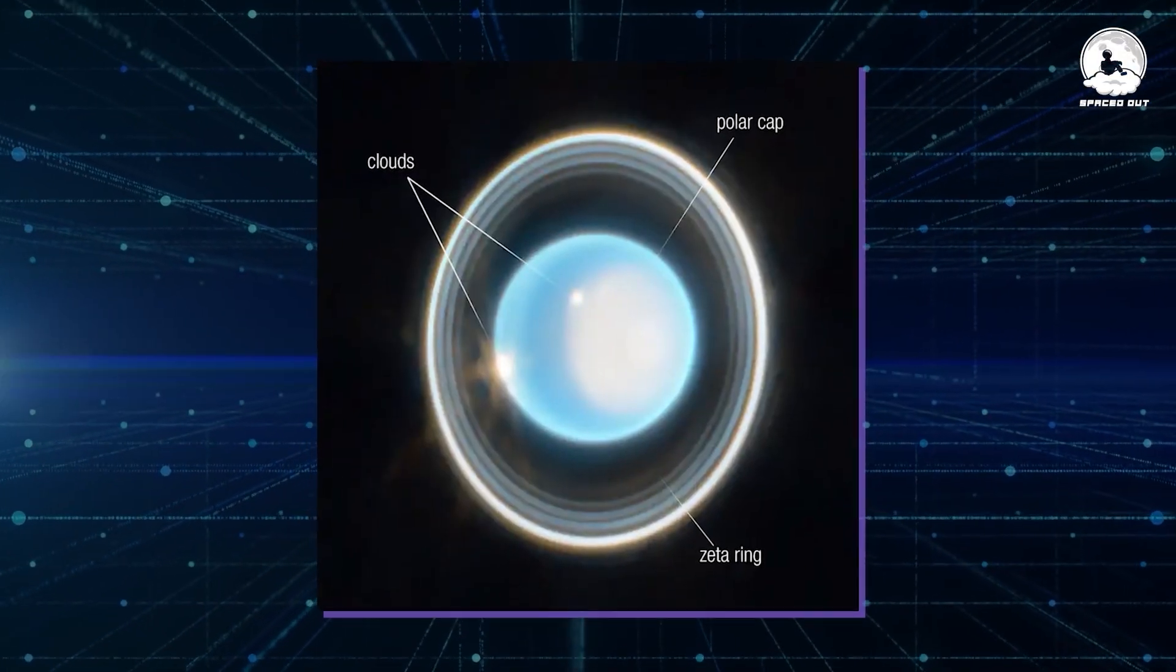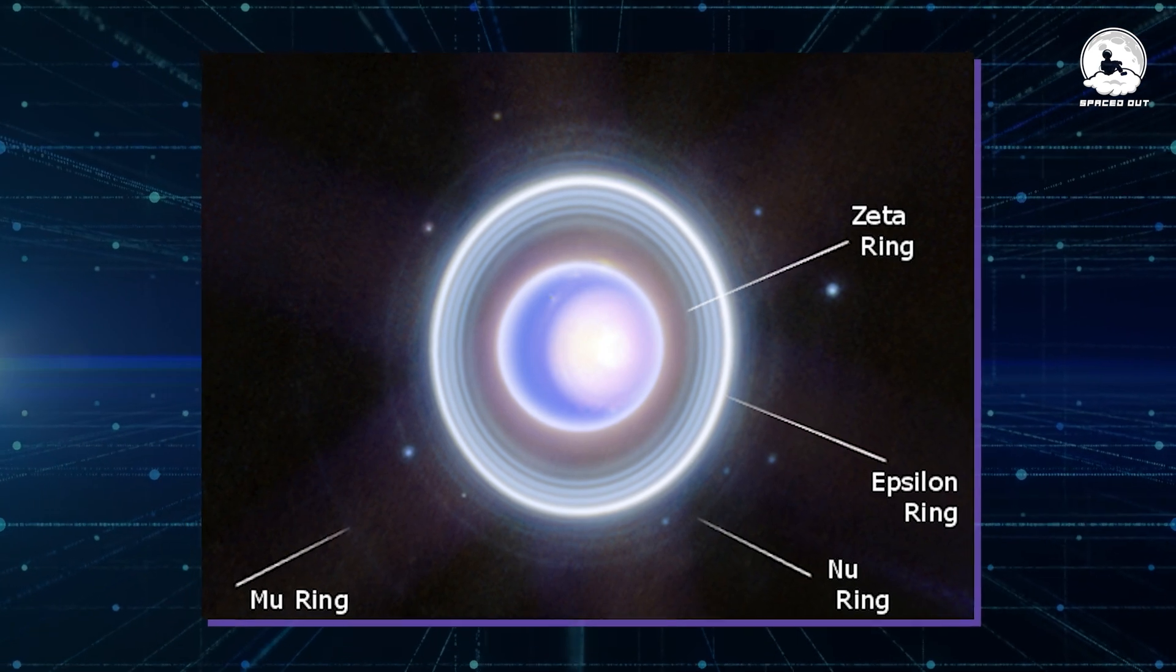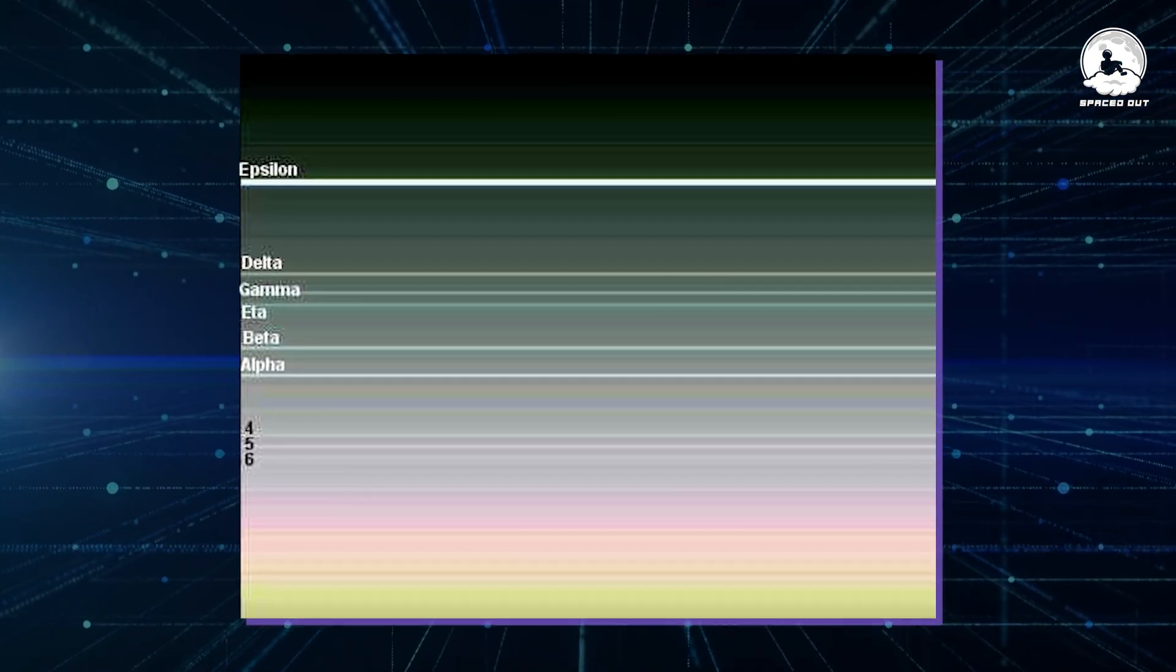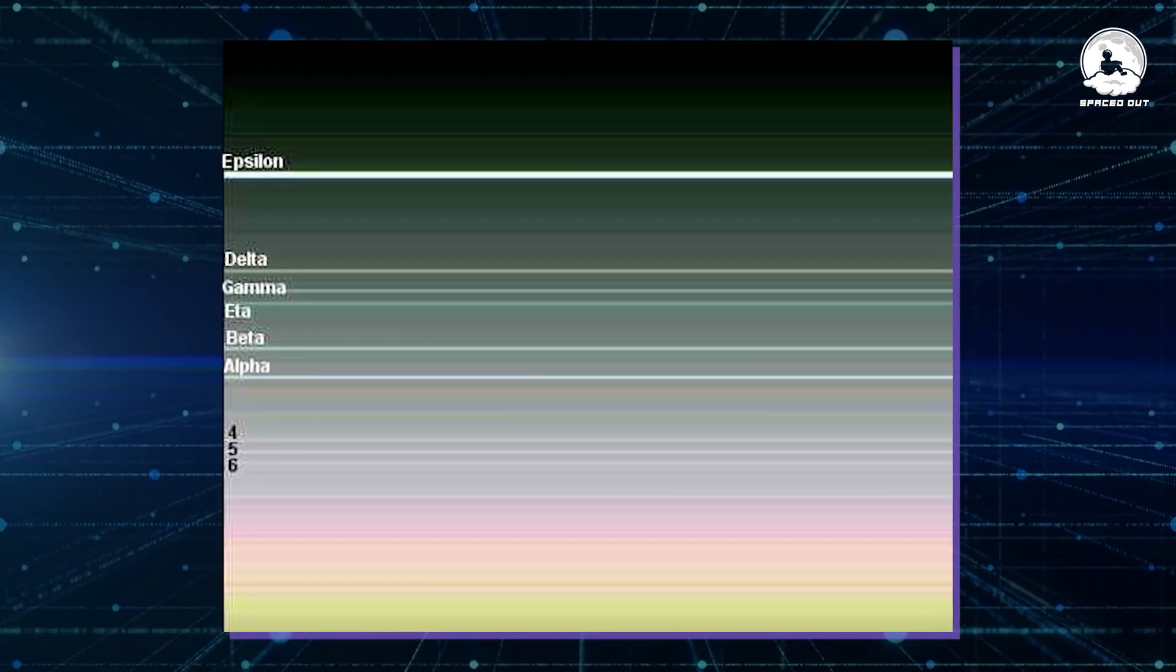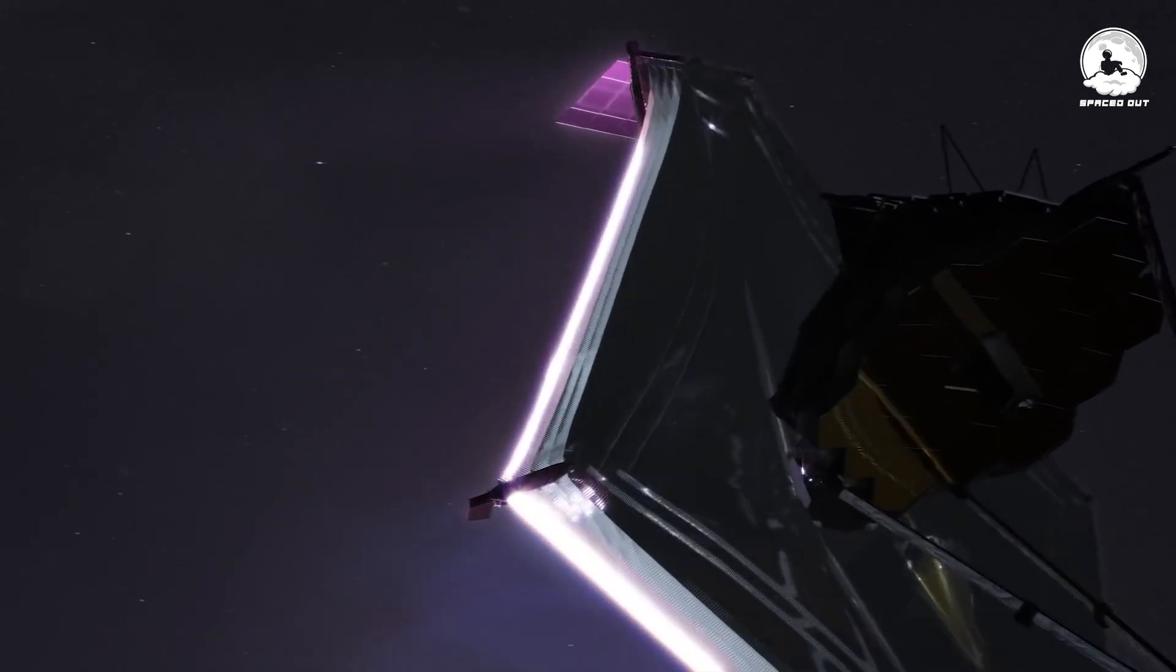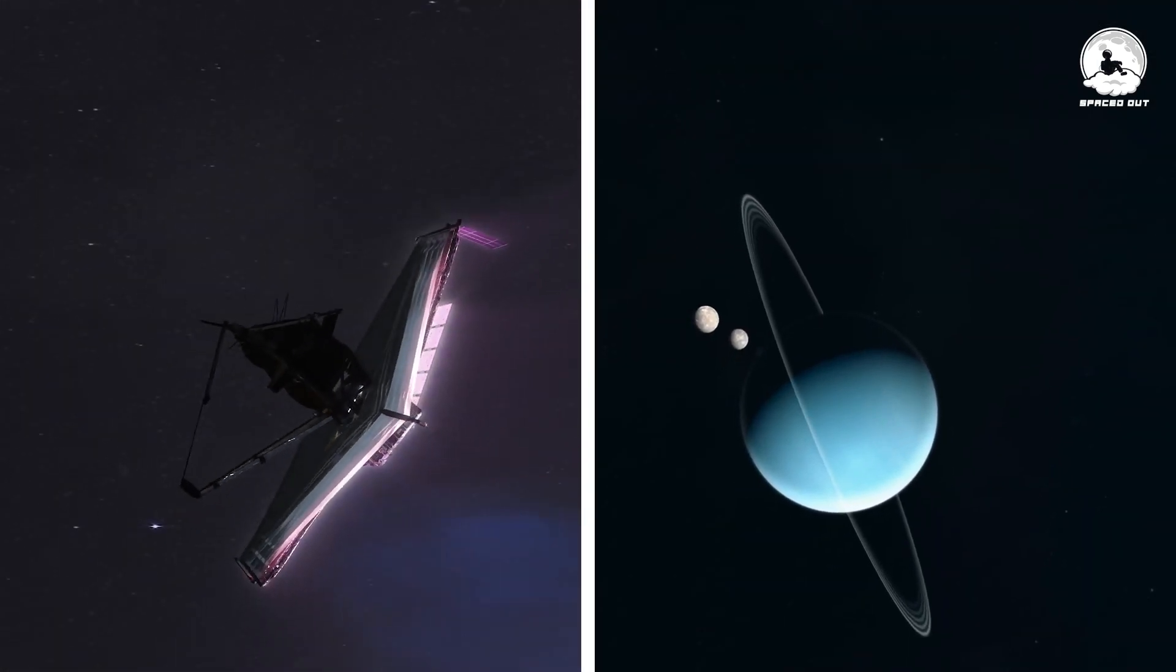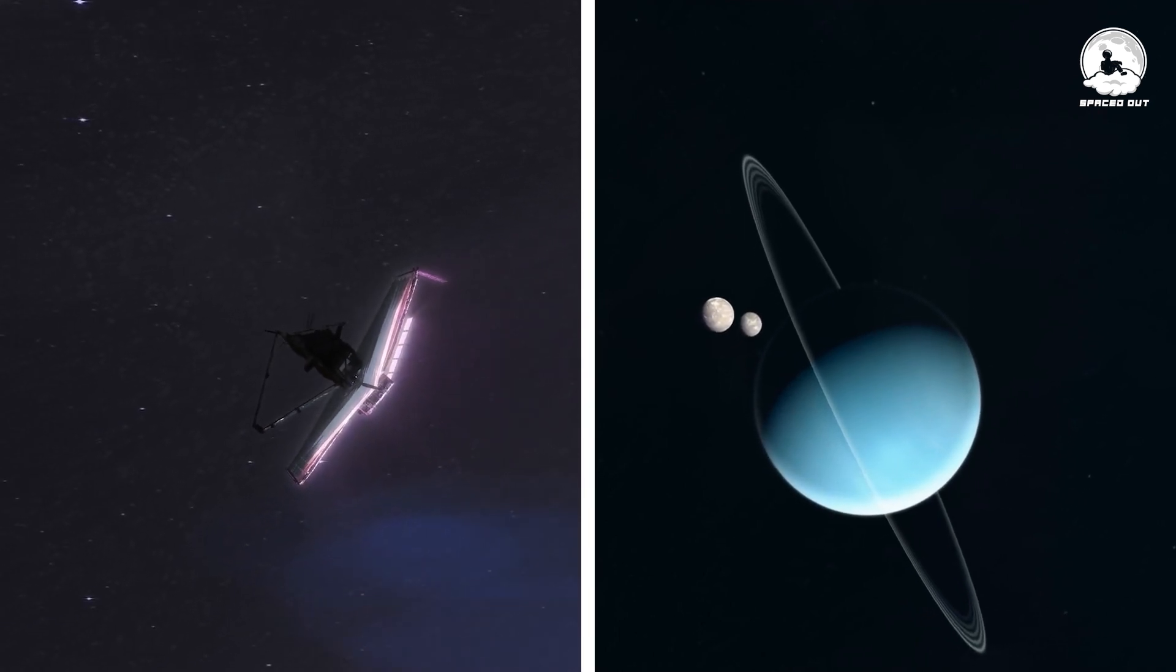Further in, observe the slender and faint zeta ring neatly positioned between the alpha and beta rings, and the delta ring snugly nestled between the beta and gamma rings. But that's not all. Webb's keen gaze also caught some of Uranus's moons gracefully orbiting within or near these captivating rings.